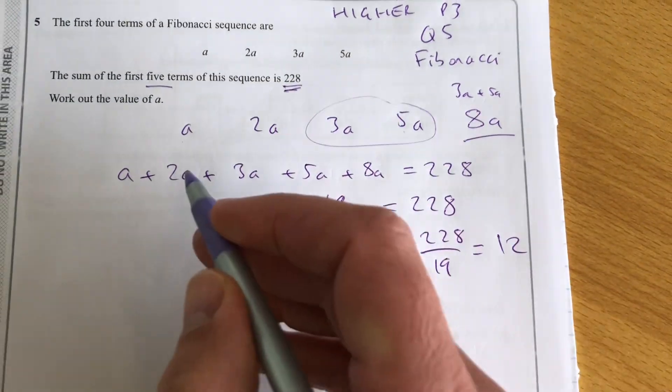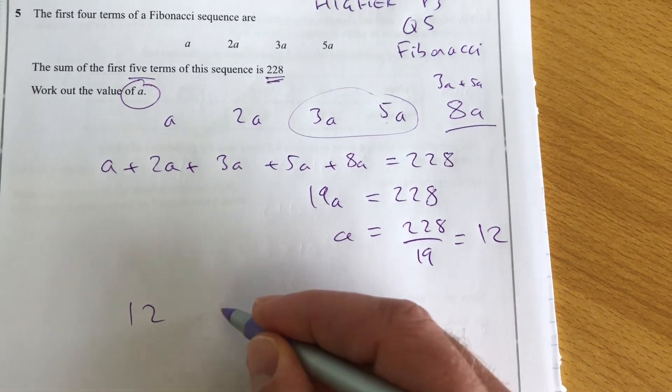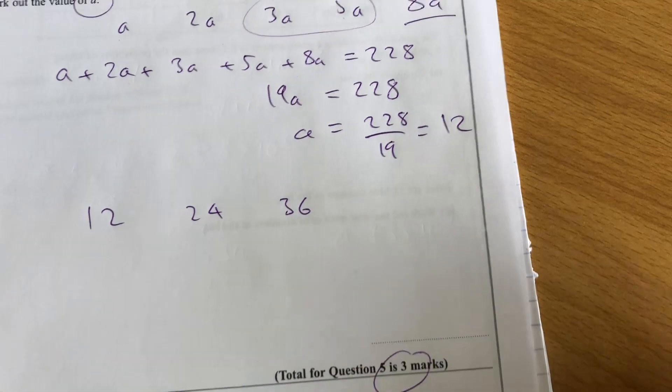12. Okay, so they've asked us to work out the value of A, so we could see that this sequence would actually go 12, 24, 36, and so on. But that should have got those three marks.